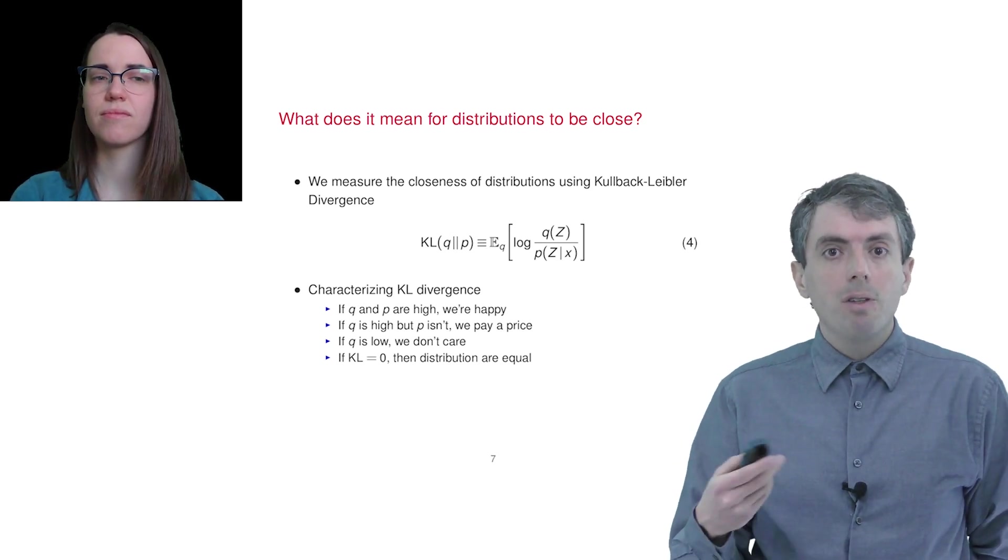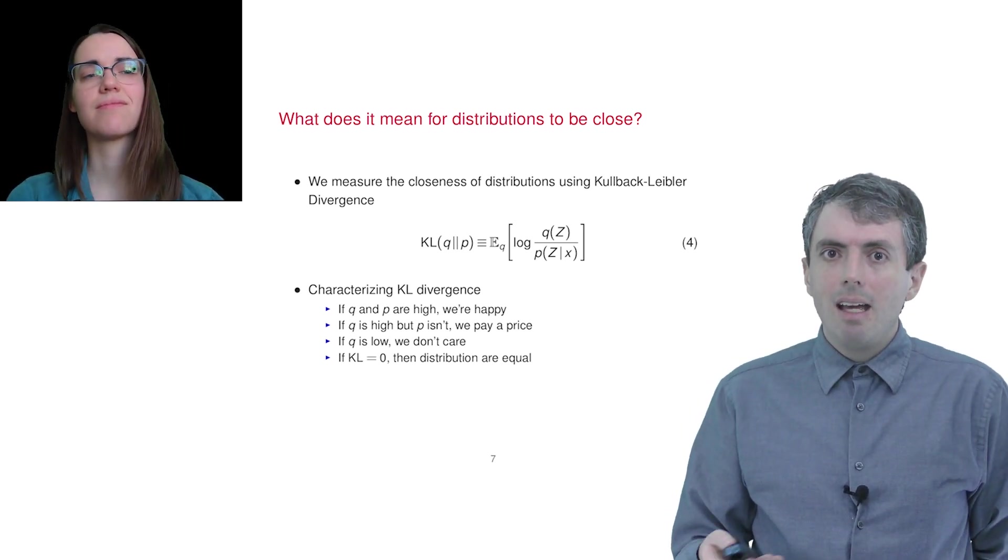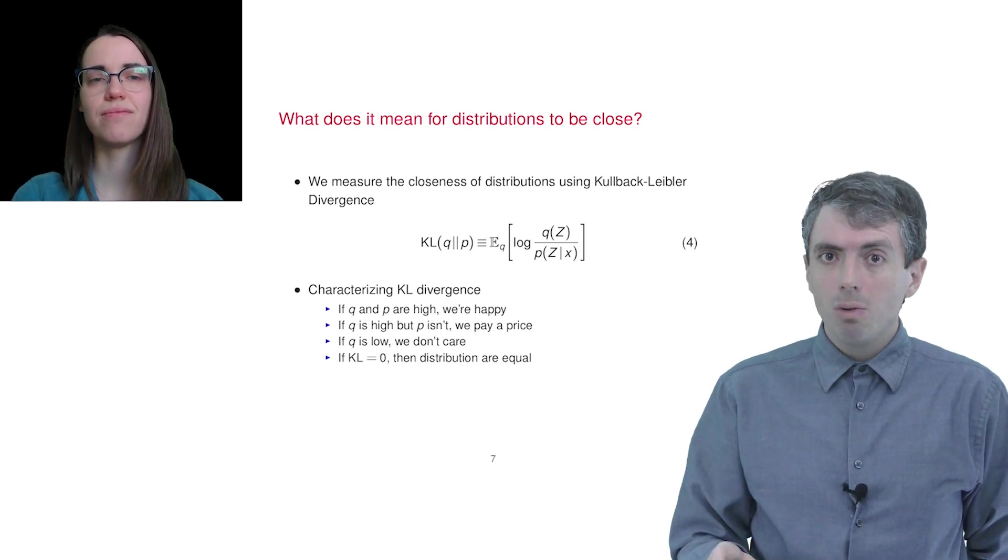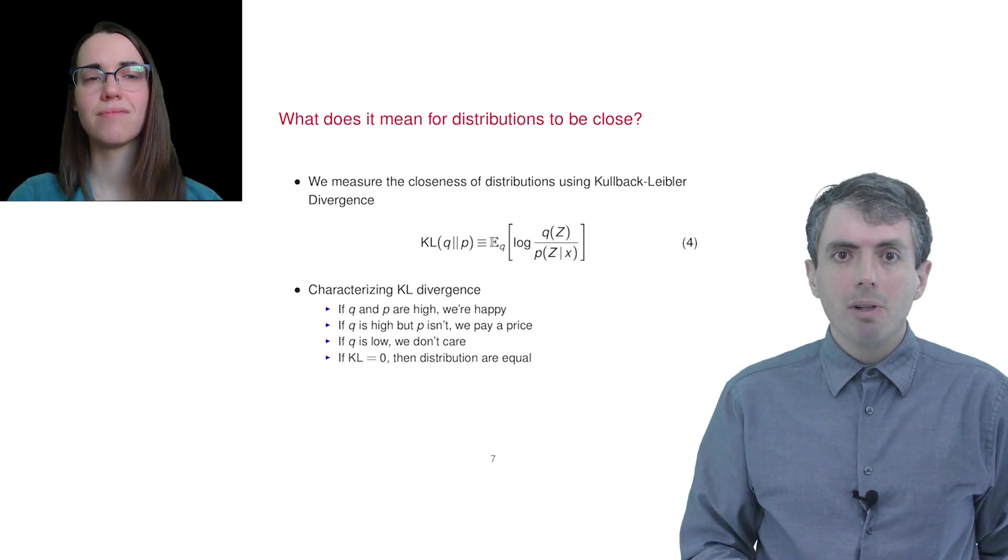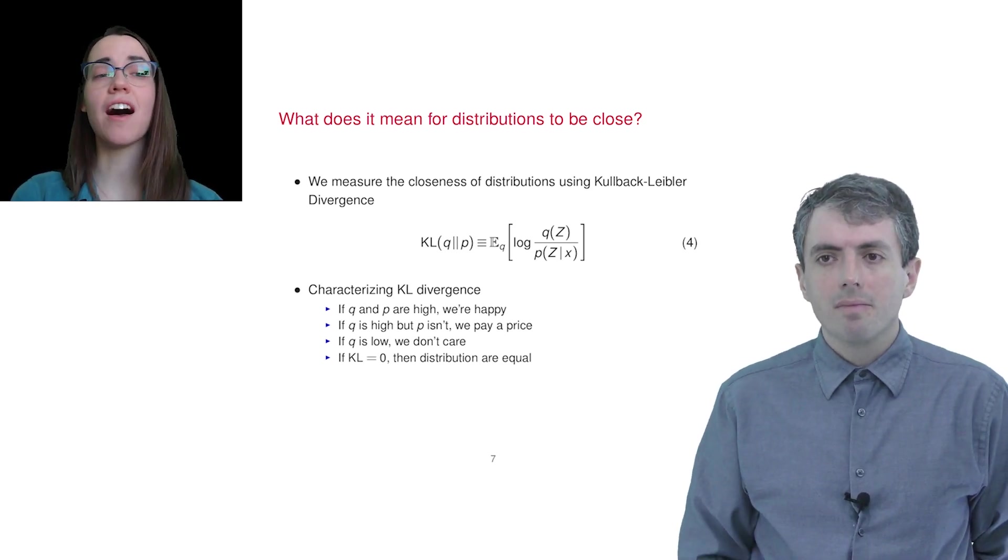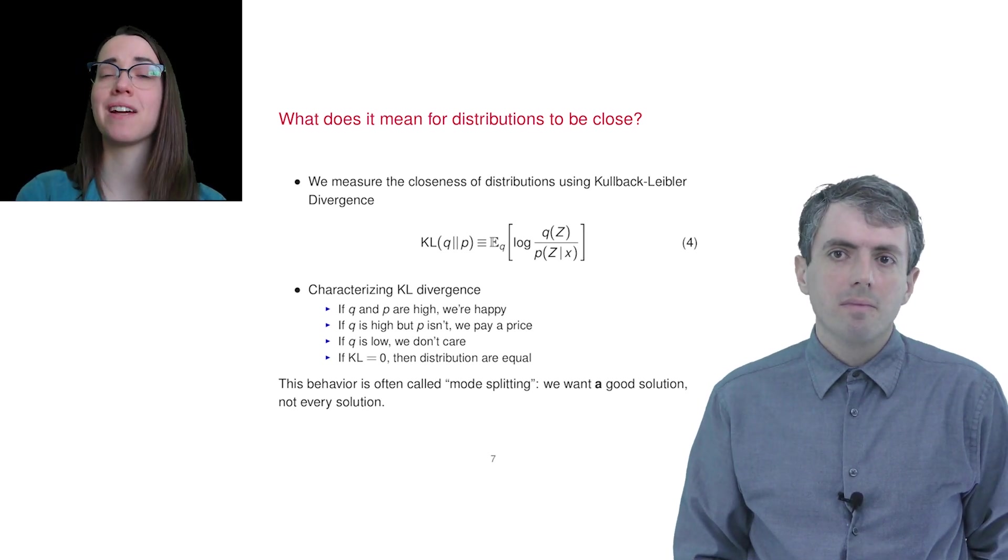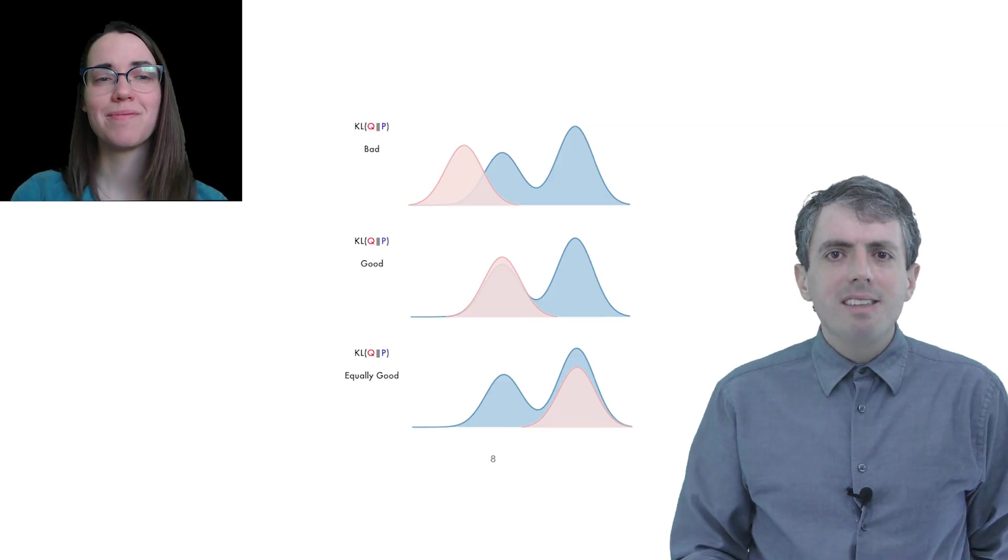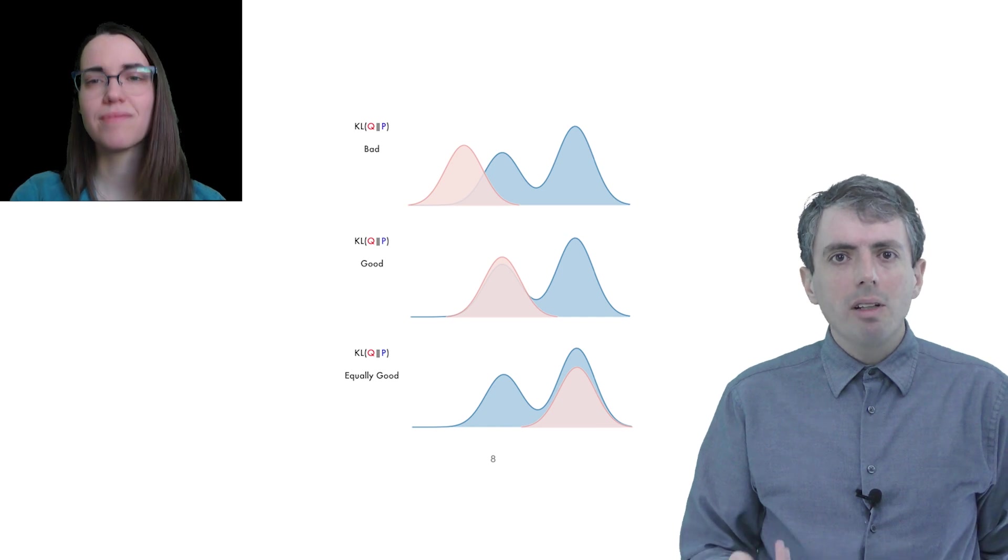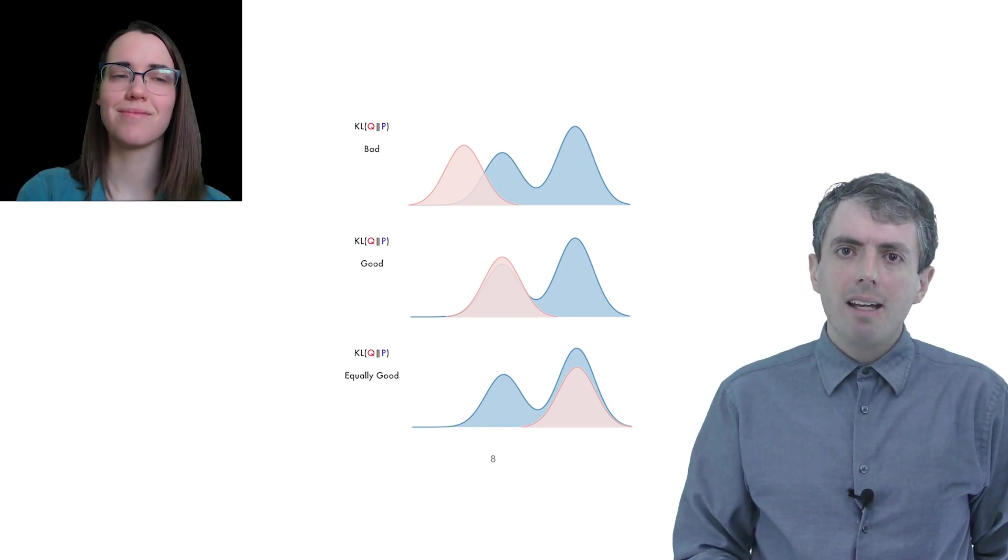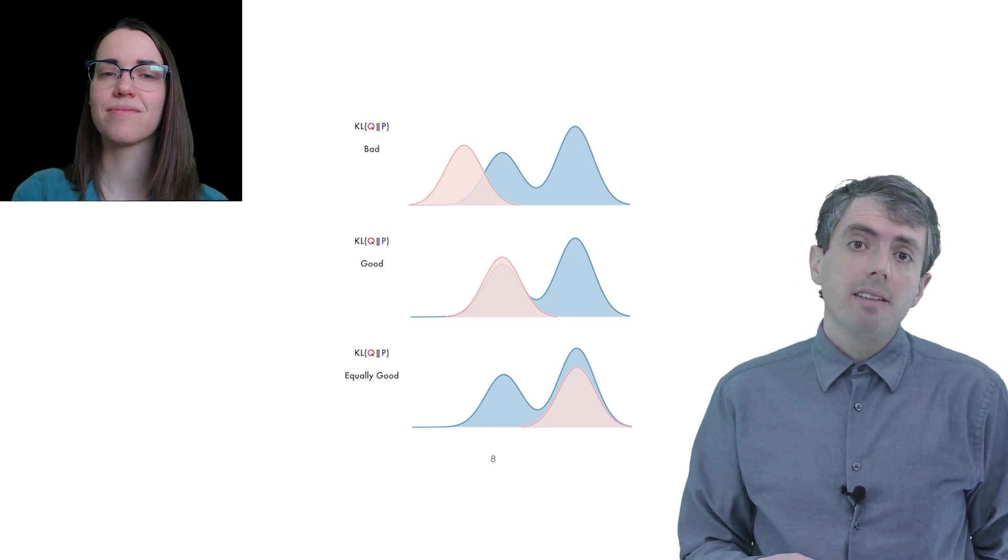But on the other hand, if q is low, then we don't care about what's going on since it's in the numerator. If KL is zero, then the distributions are equal because you have 1 over 1 in the input to the log function, and then it's zero everywhere. Yes. This is often called mode splitting. We're looking for a q that finds one good solution, not a q that finds every possible solution. Maybe we can see a picture to make it clearer. We have q as the red distribution, and we're looking for a place where both q and p are high. But q can't be high when p is not. Great. Okay.